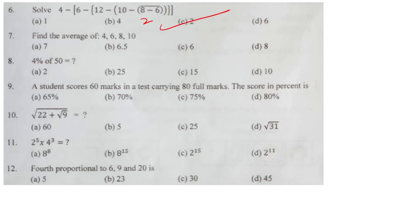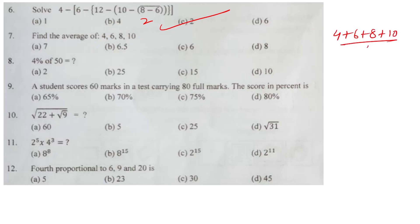Find the average of 4, 6, 8, 10. Add them and divide by 4 — there are 4 numbers. 4 plus 6 plus 8 plus 10 divided by 4 equals 28 by 4, which is 7.